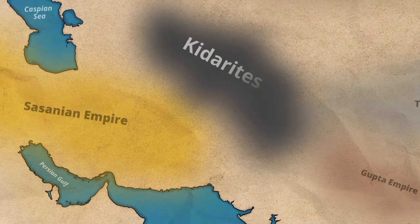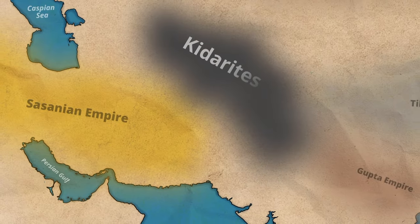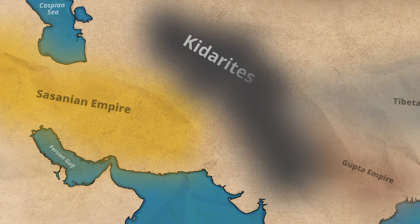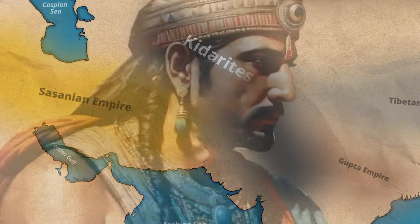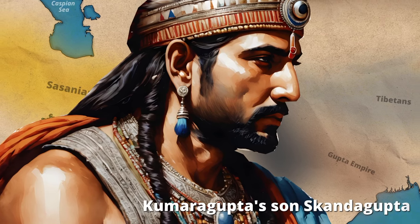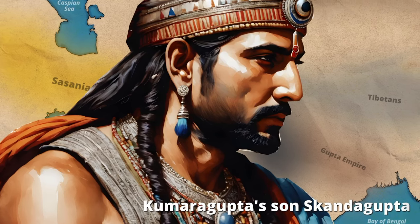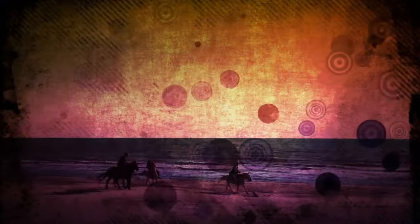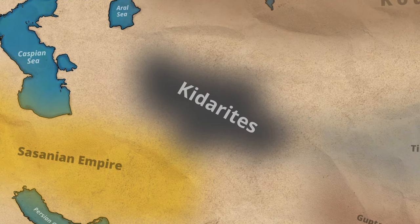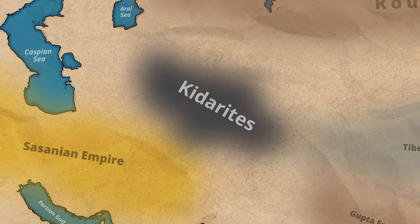The White Huns had started their expansion southward around the 450s AD, and they had invaded India repeatedly during the reign of the Gupta monarch Skandigupta. These White Huns were basically repeating the routes of the political expansion of the Greco-Bactrian and Kushan rulers, and this expansion was being undertaken while the White Huns were still under the rule of the Kitarite dynasty.